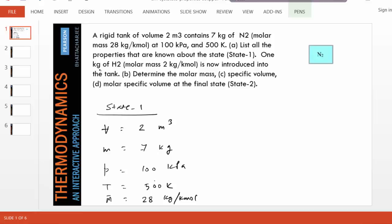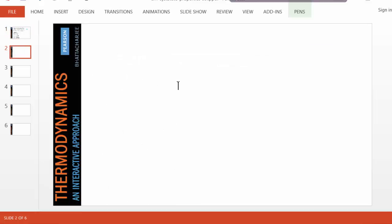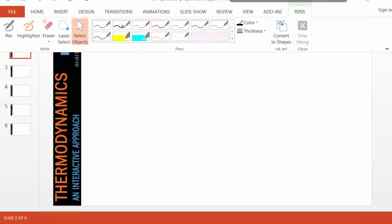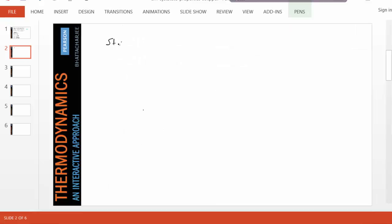And now, 1 kg of hydrogen is introduced into the tank and we are asked to find some properties of the new state. We'll call the new state State 2 and we'll list all the properties of State 2. Well, first of all, we know that the volume is going to remain the same.